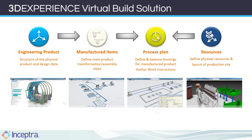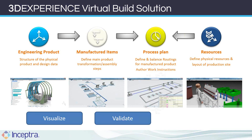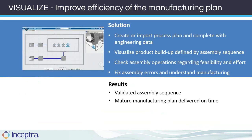The Virtual Build Solution centers around providing a significant leap in planning efficiency and quality by giving planners a connected platform to assemble the product, balance the line, and document procedures — all in the virtual world. There is a complete digital thread between what is being produced, where and how it will be produced, and the resources needed to produce it. In three short words, Virtual Build is a complete platform to visualize the assembly sequence, validate that build specifications conform to product design, and derive very easy-to-understand work instructions for the shop floor. Let's move to a series of three brief live demonstrations illustrating these three core values: visualize, validate, and document. The first demonstration highlights the capabilities that allow us to reuse engineering data and visualize the process plan and product buildup to quickly arrive at a very mature manufacturing plan.